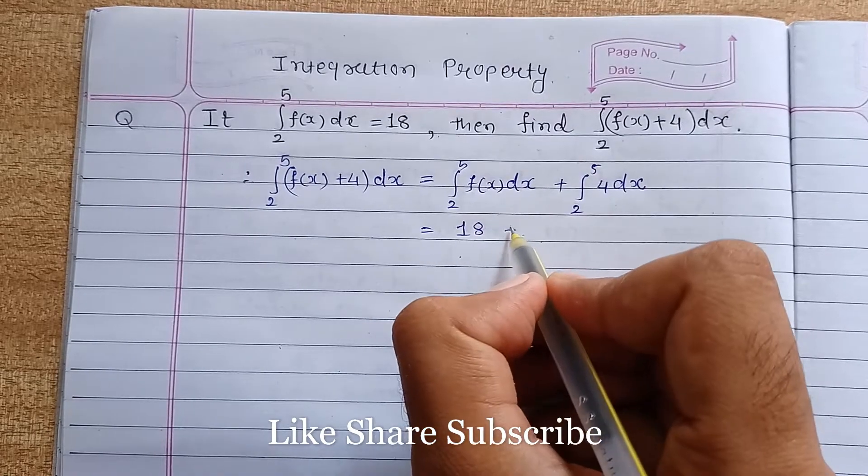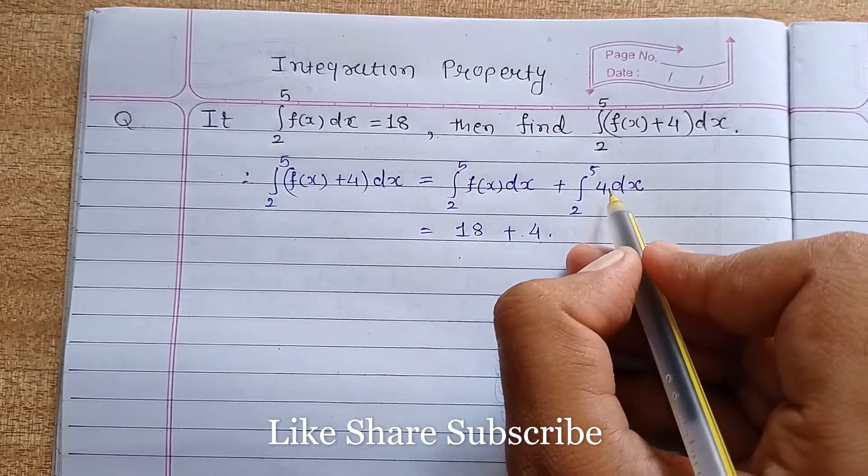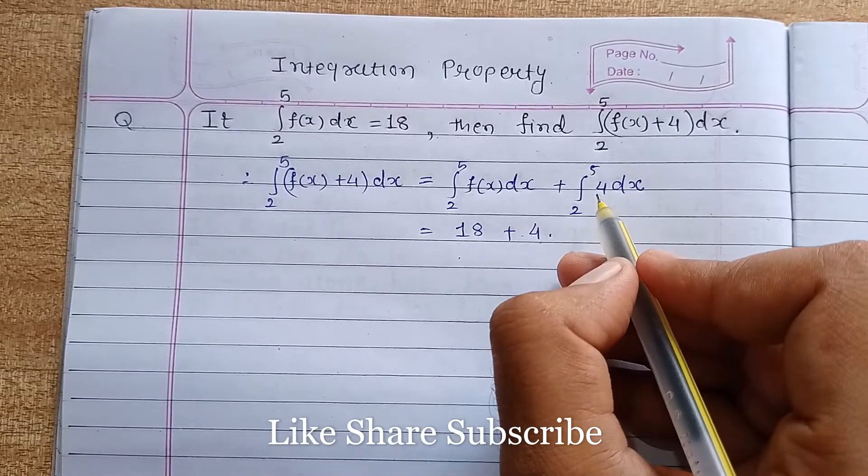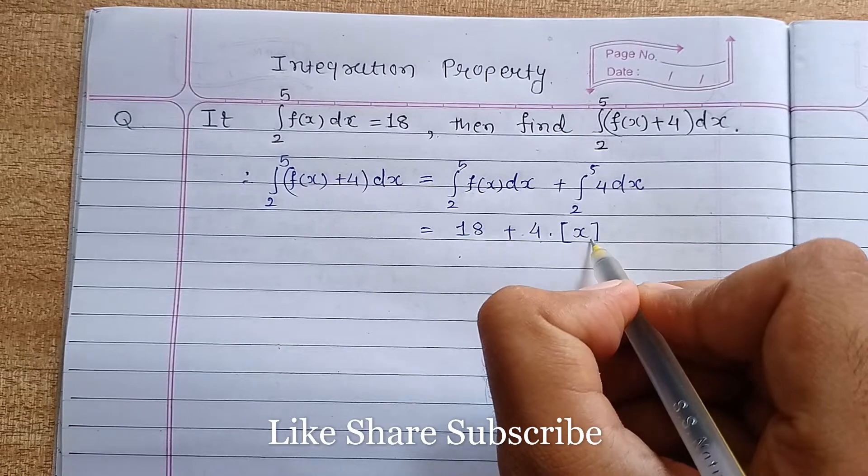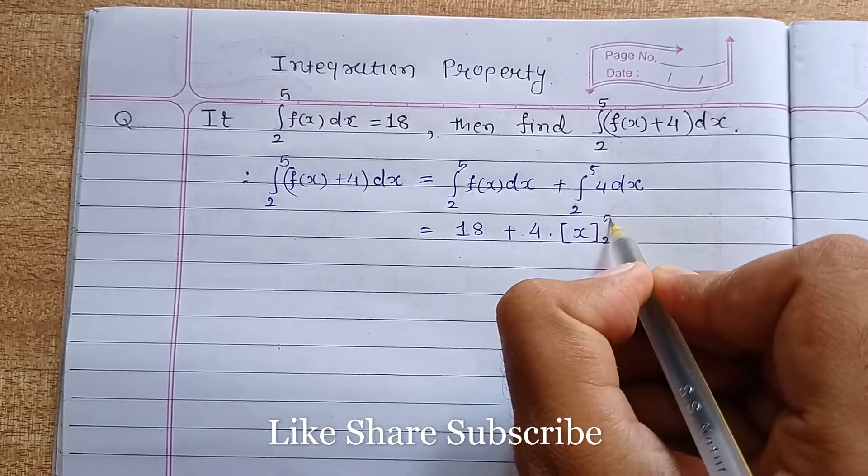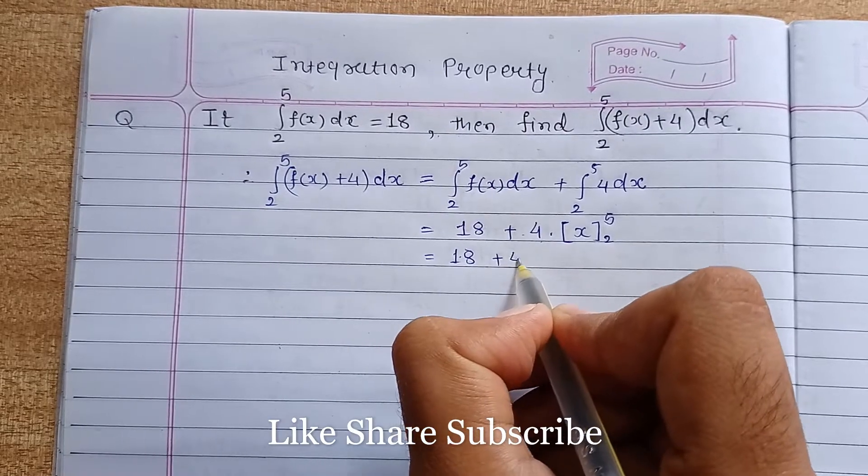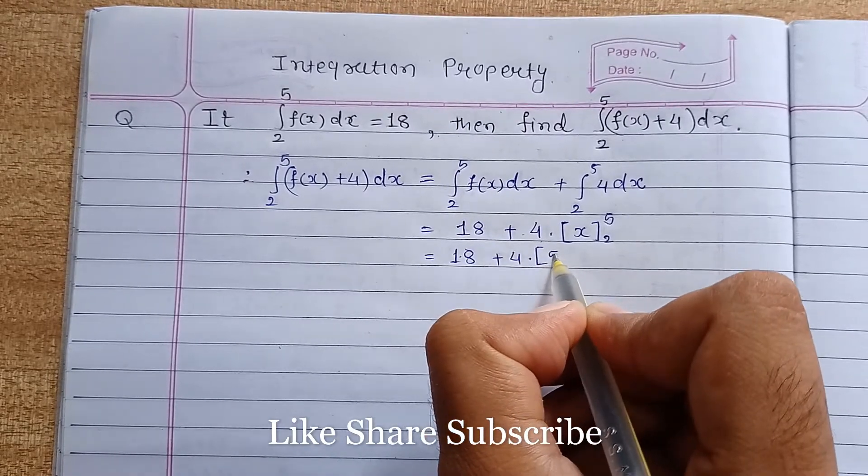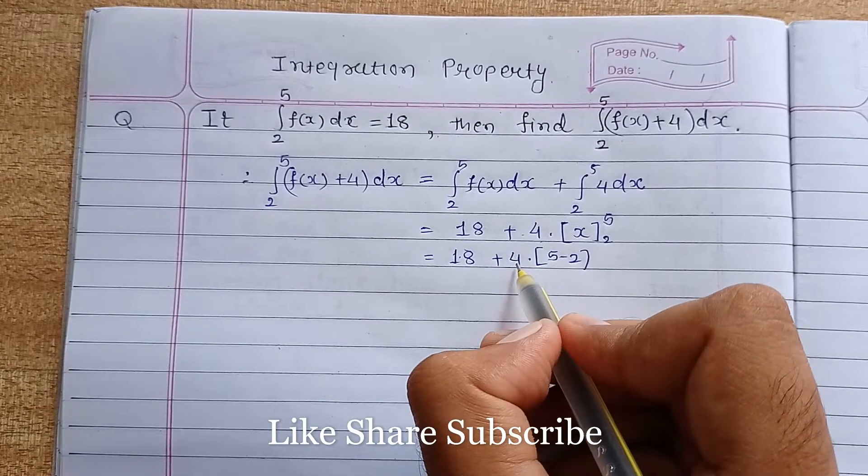So this is 18 plus 4 is constant. Integration of 1dx, the integration of 1 is x, so x with limits 2 to 5. That's 18 plus 4 times (5 minus 2).